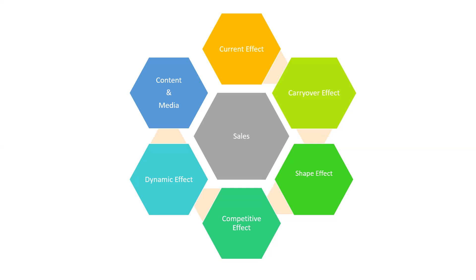Then we have shape effect — the change in sales in response to increasing the intensity of advertising in the same time period. There are three typical shapes: a linear curve, a concave curve, or an S-shaped curve. By using a simple scatter plot we can understand the shape effect.